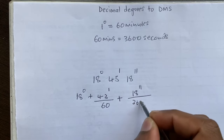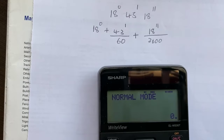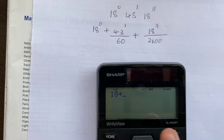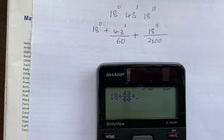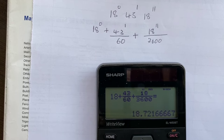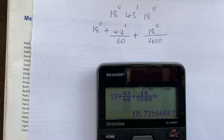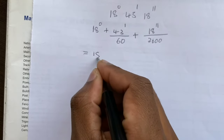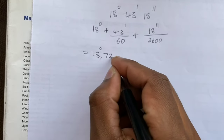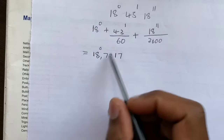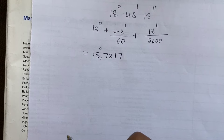Then add 18 seconds divided by 3600. Punching this into the calculator: 18 plus 43 divided by 60, plus 18 divided by 3600. The answer is 18.7217 degrees. We only take four numbers after the decimal point, rounding the last digit to the nearest ten, so the answer is 18.7217 degrees.